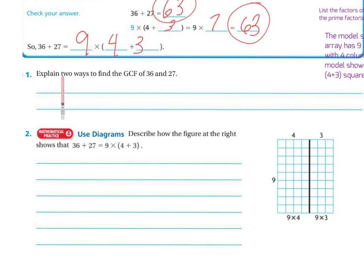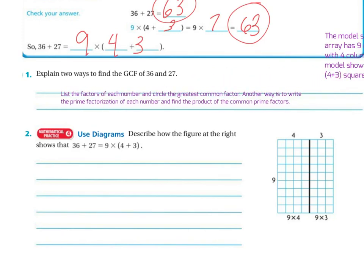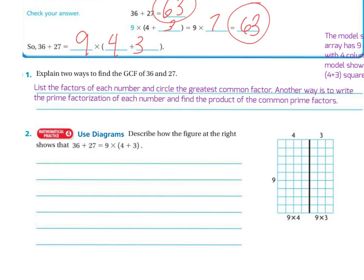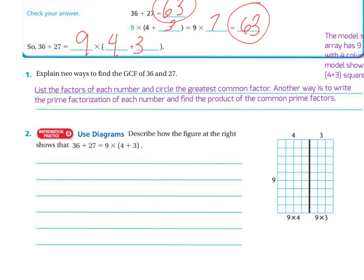Explain two ways to find the greatest common factor of 36 and 27. Well, first of all, you can list the factors in each number and circle the greatest common factor. Another way is to write the prime factorization of each number and find the product of the common factors.